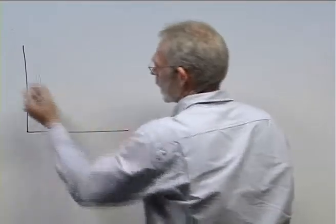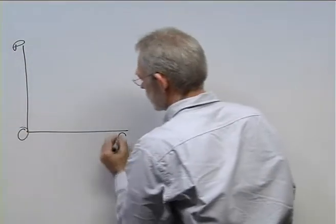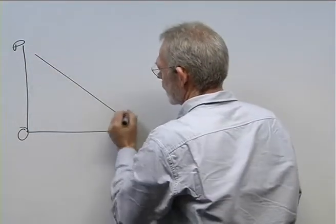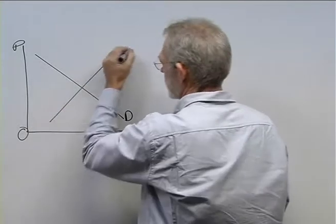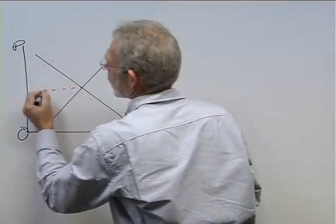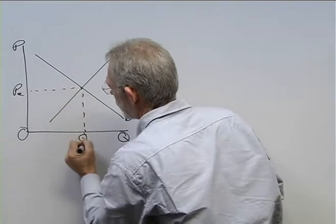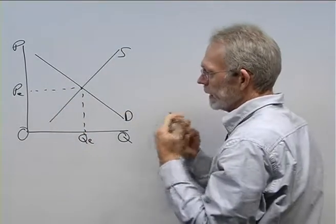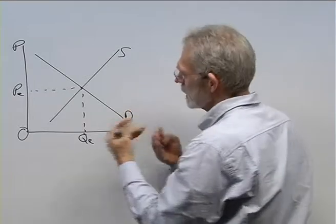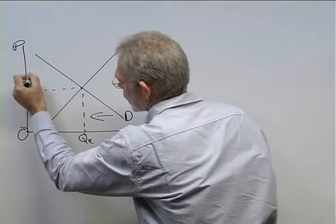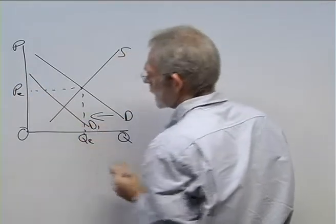We start with the diagram of the market, demand and supply. We have equilibrium price and equilibrium quantity. Now we have a decrease in demand, in other words, a leftward shift of the demand curve, say to D1.